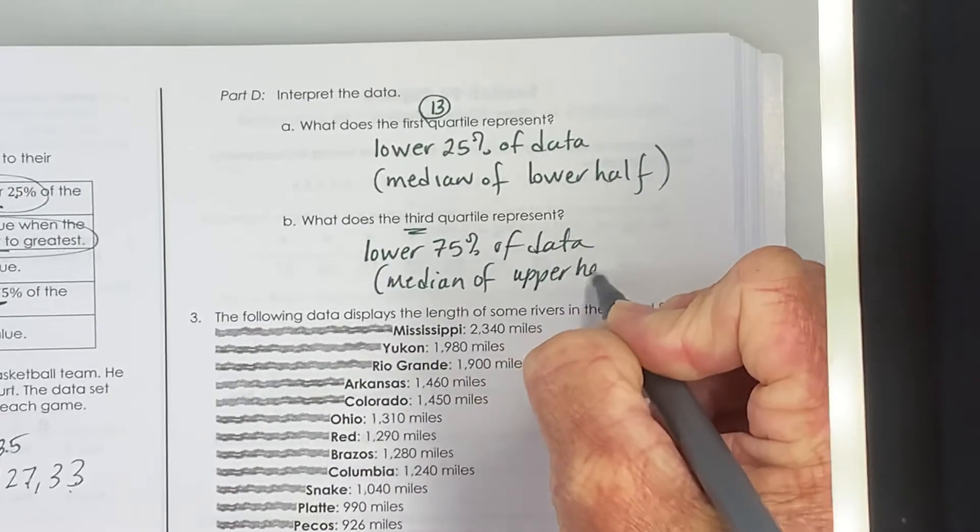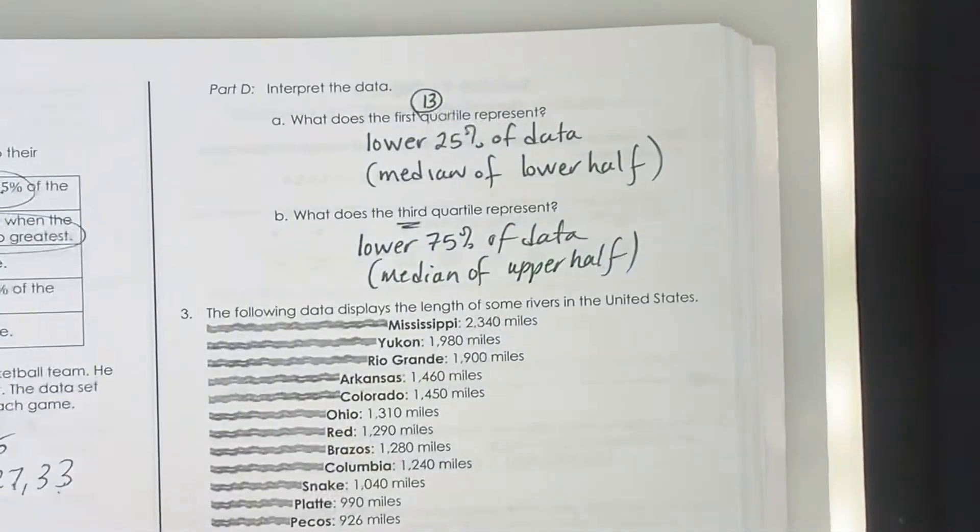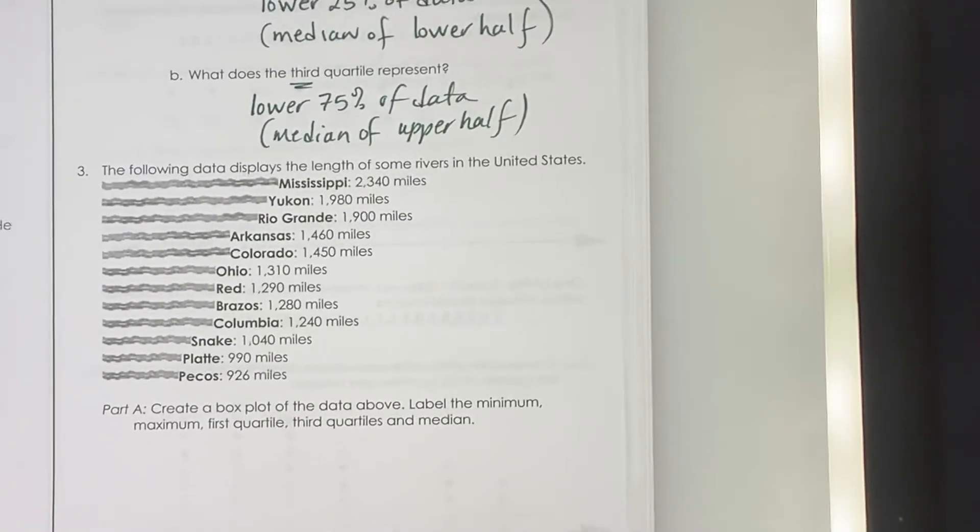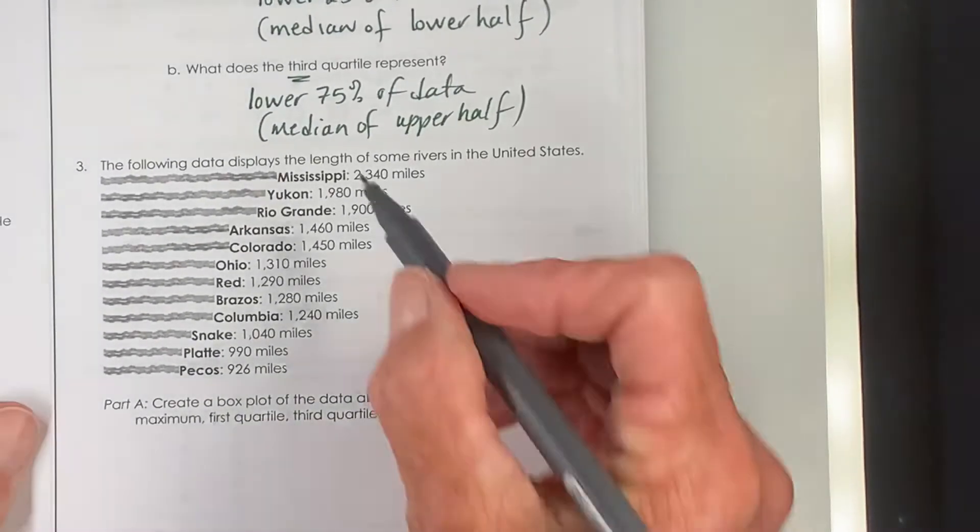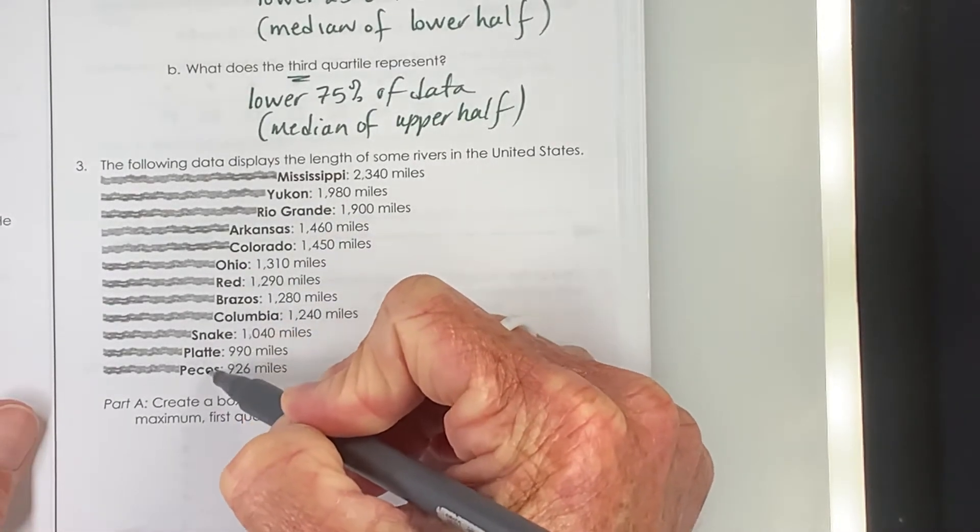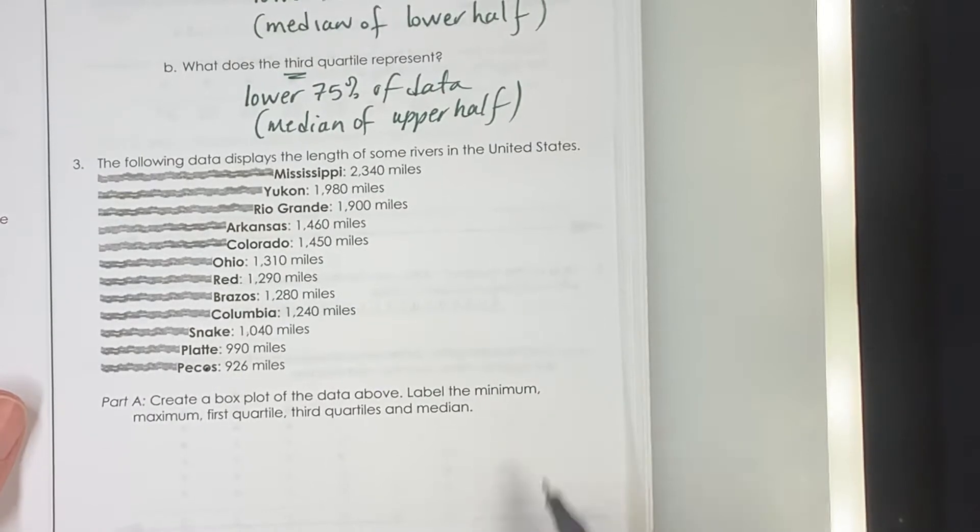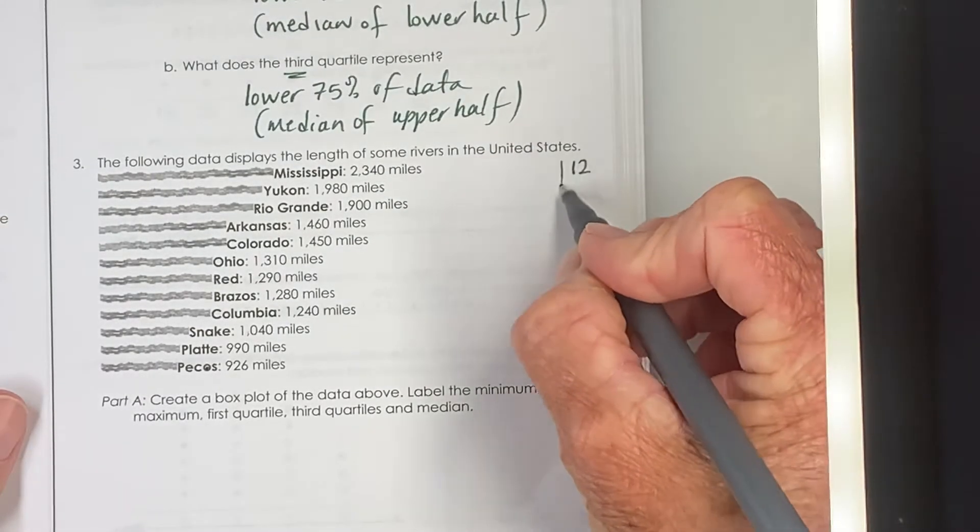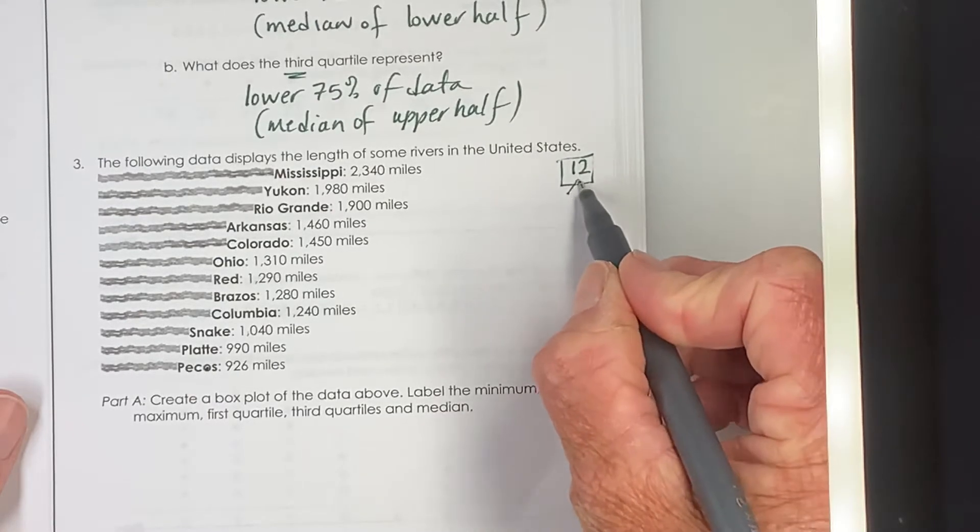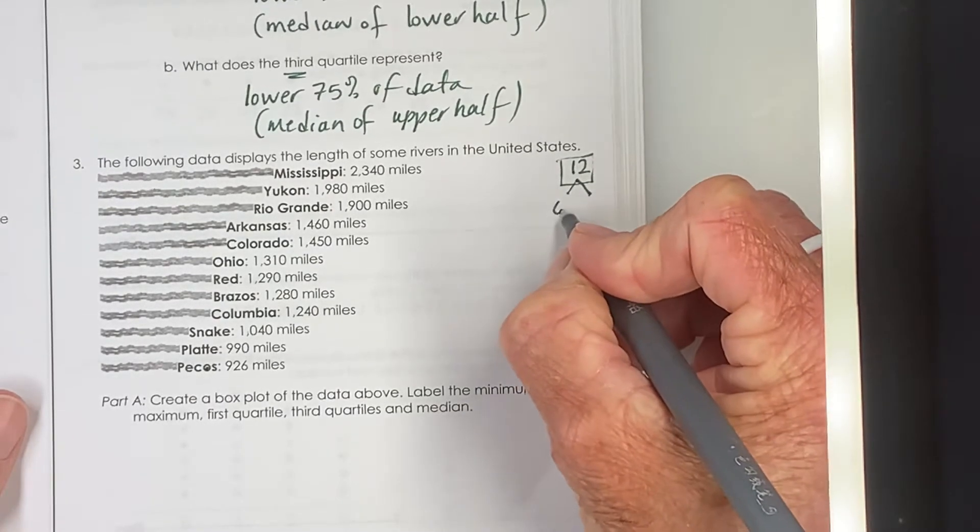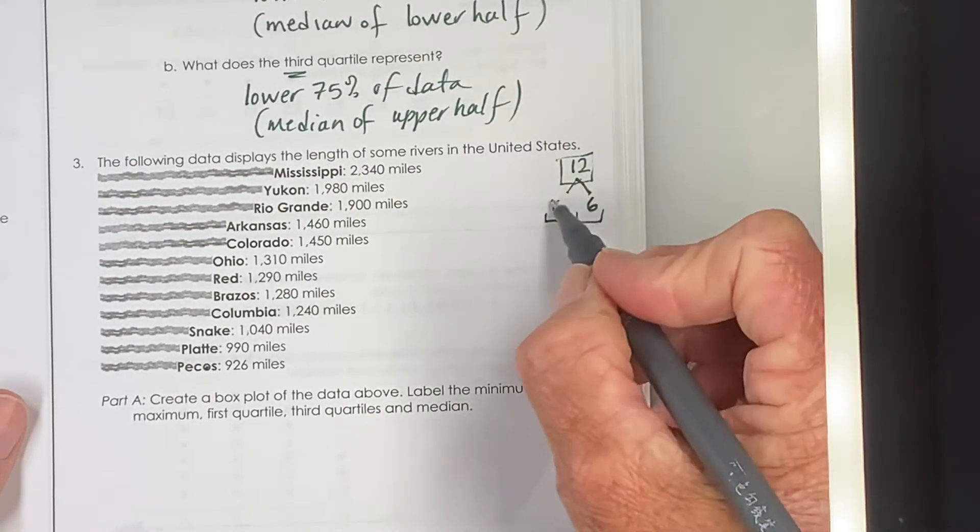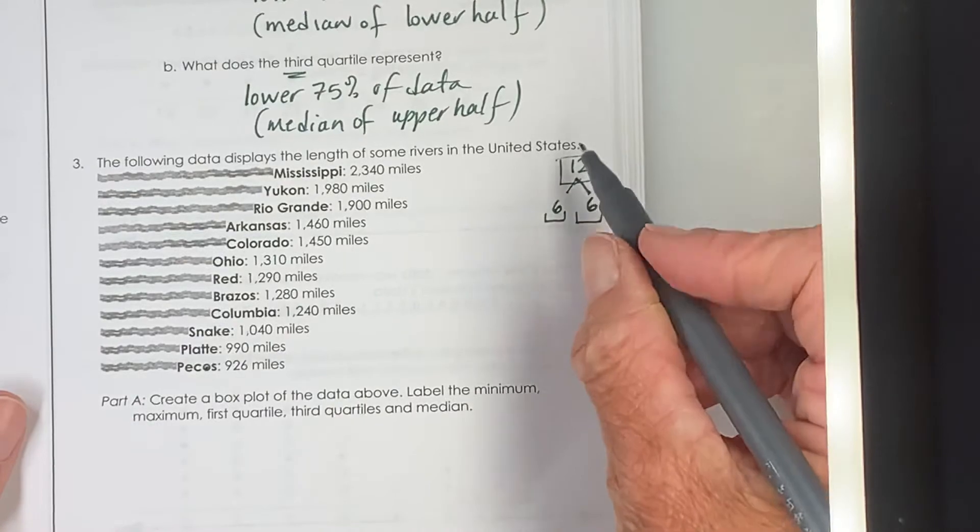So it's a number that was in the middle when we arranged those in order. We have some rivers in the U.S. Let's count them. We have two, four, six, eight, 10, 12 rivers. And we're going to make a box plot. So we have 12 items in our data set, an even number. And even when we split 12 in half, six and six, we're going to have even numbers in the lower and upper half of the data. So we're going to have to calculate the median every time.